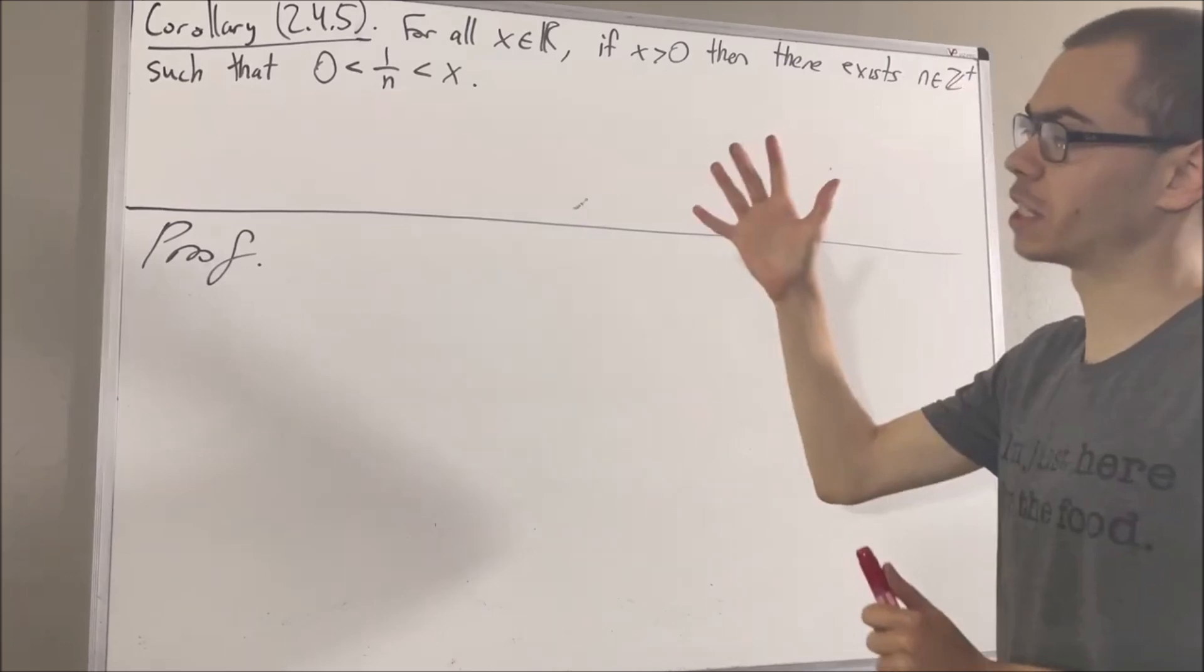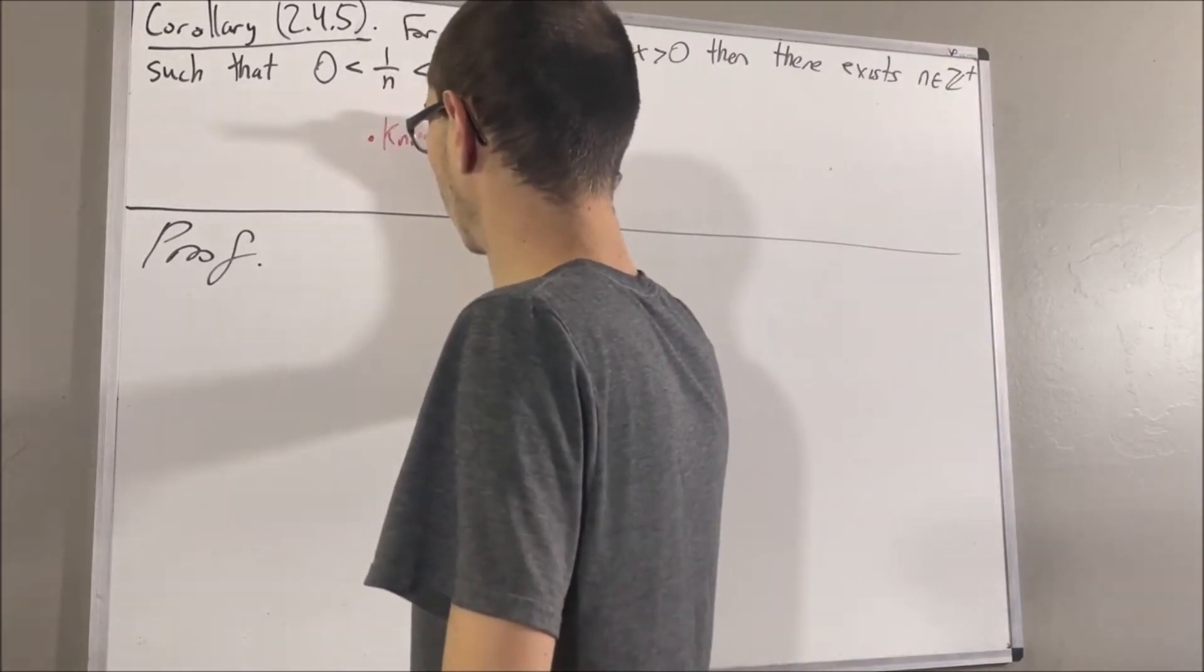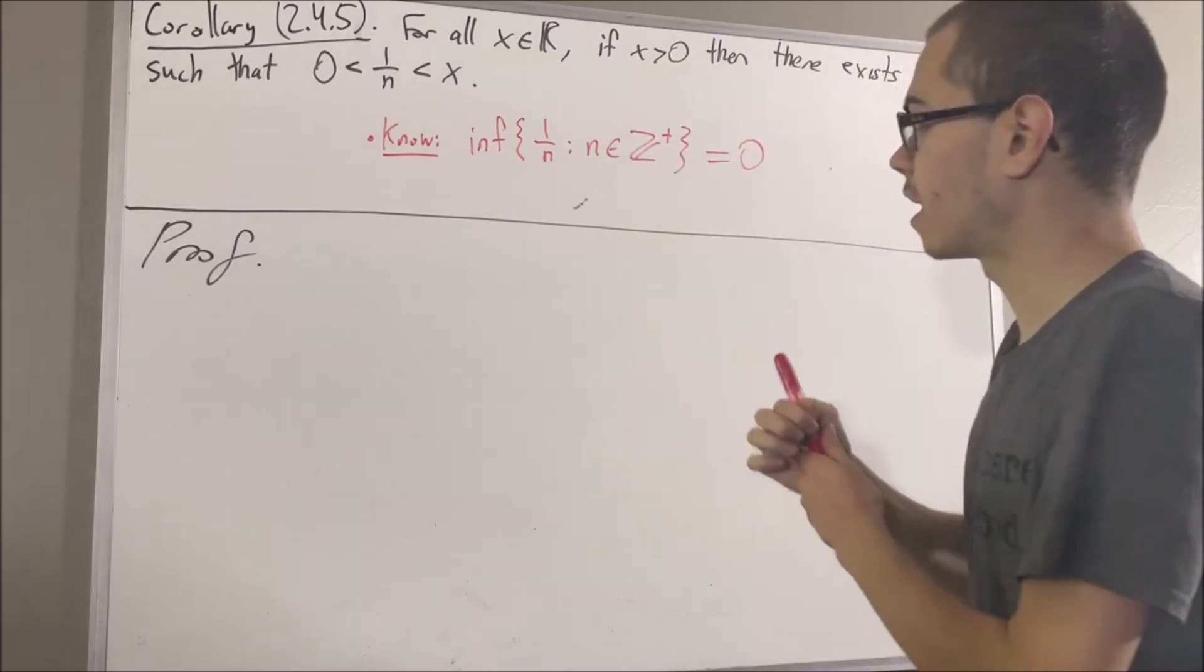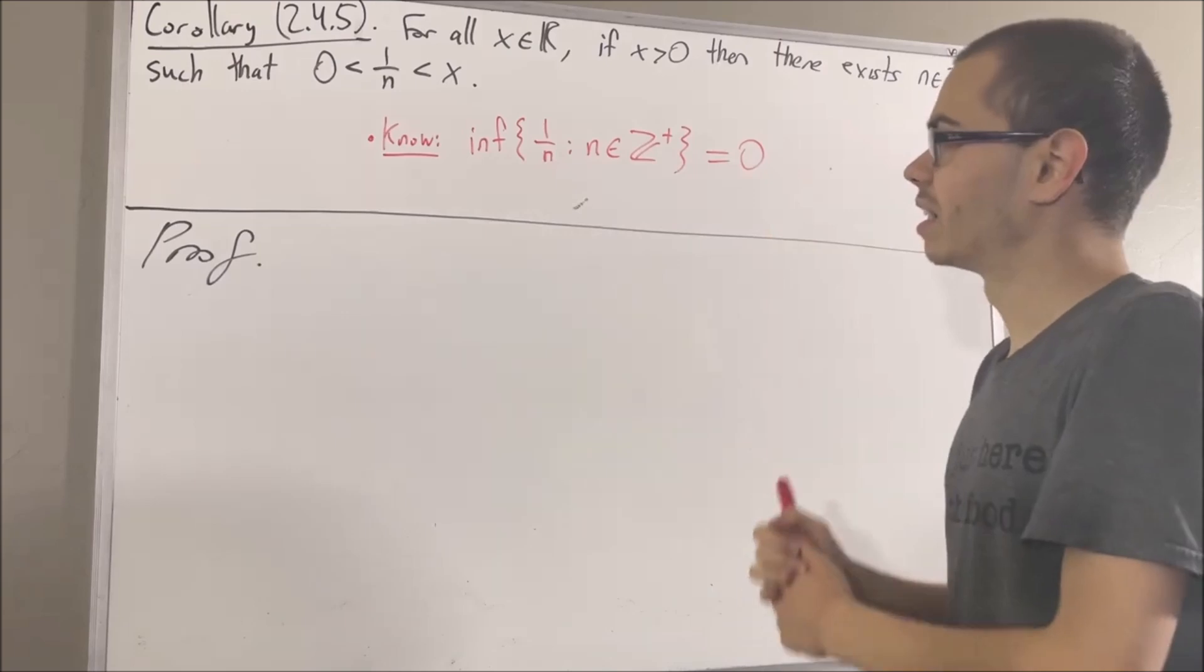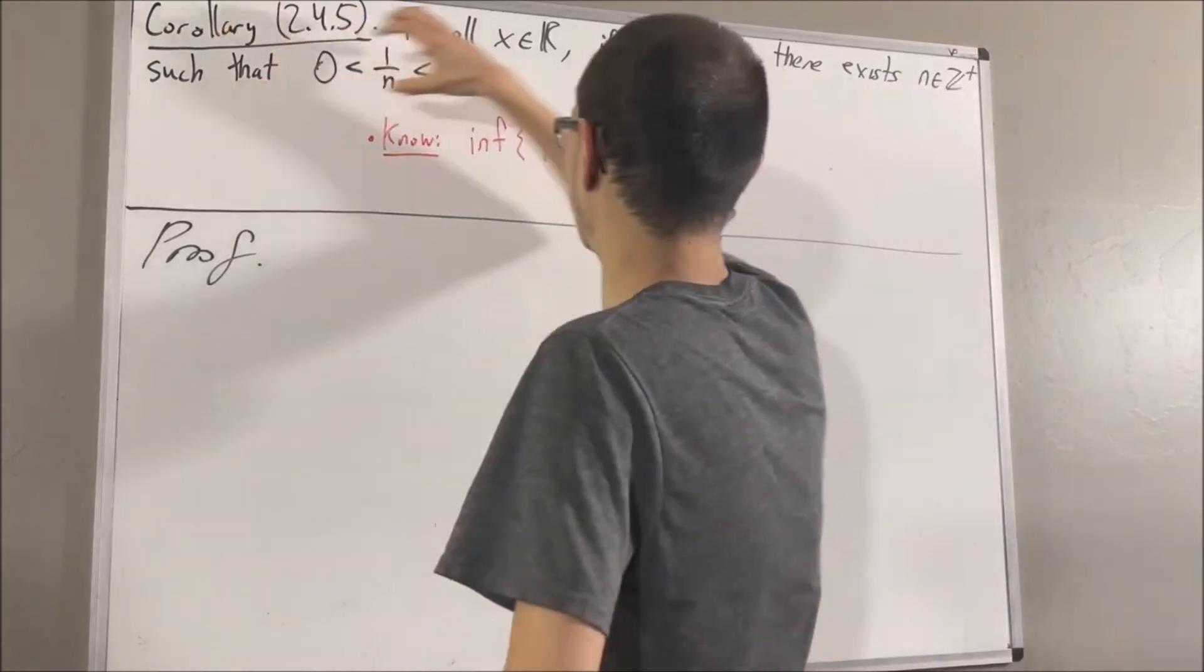Now in proving this corollary we are going to rely on the following fact. It's the fact that the greatest lower bound of this set is equal to zero. Now let's get into proving this corollary.